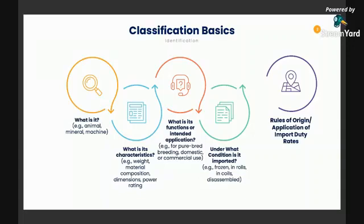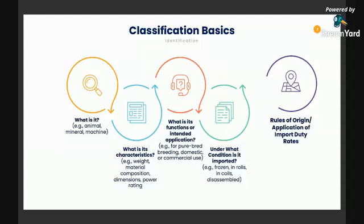Next, you ask yourself what are the characteristics of this product. For example, the weight, material, composition, dimensions, and power rating. Because in the tariff nomenclature, there are some specific Harmonized System codes that set forth a specific description or category. For example, there's a subheading that provides 100 watts for a specific machine, or a description that includes chocolate as part of a mixture.